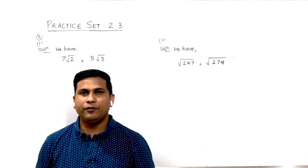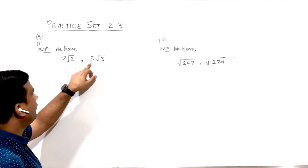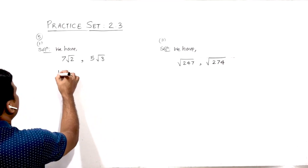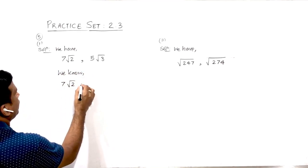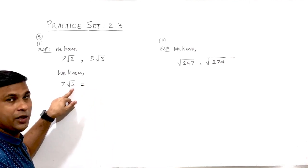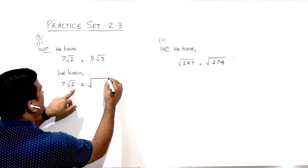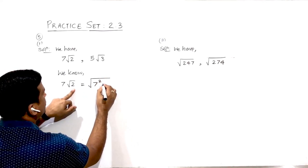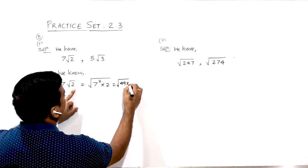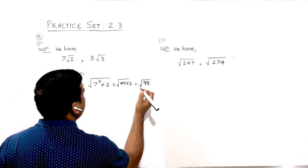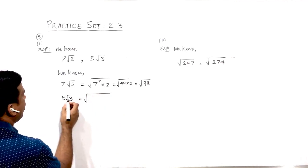Question number five: compare 7√2 and 5√3. We need to first simplify them. We know that 7√2 can be written as — since the order is 2 — when 7 comes inside it takes the power of 2, so 7² × 2 = 49 × 2, giving √98.